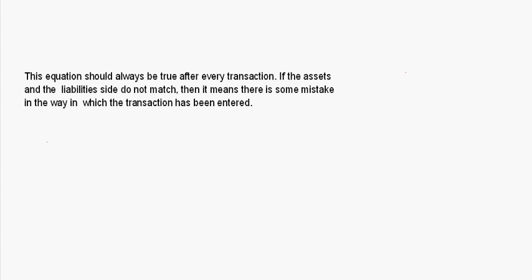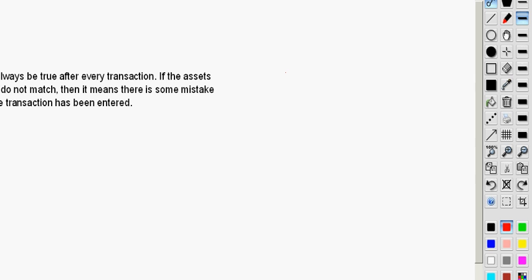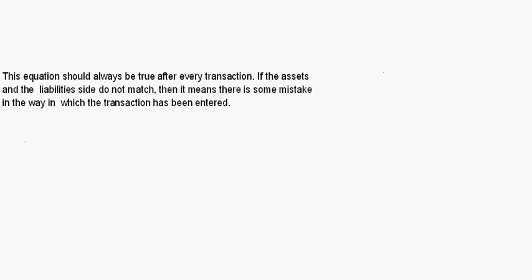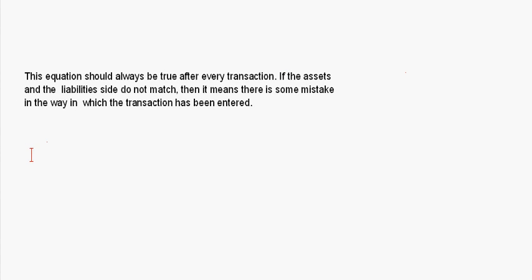If the asset side is not equal to the liability side, that means you have committed a mistake in entering that transaction — either in putting the amount correctly, or you have put the transaction on the wrong side or something like that. The asset side should always be equal to the liabilities side.